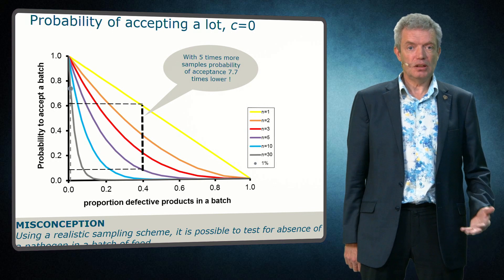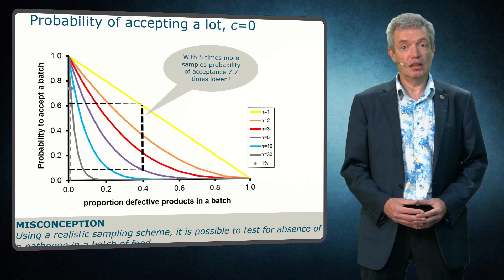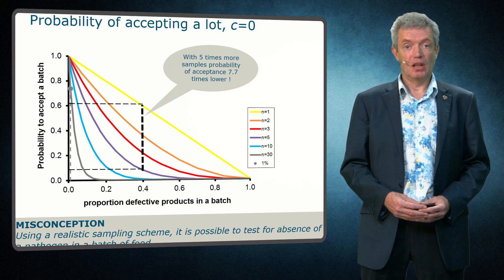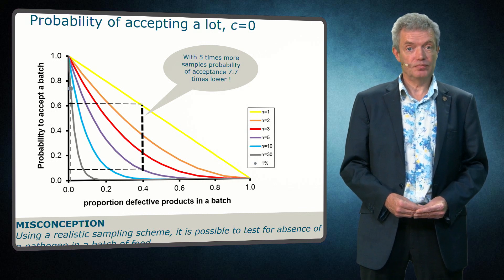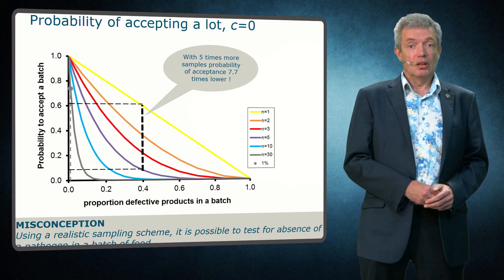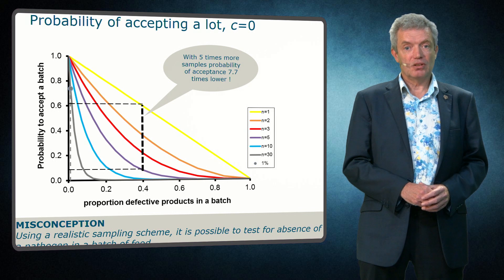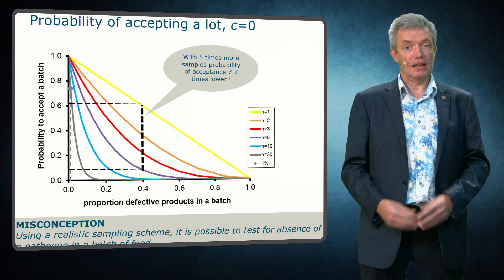Using a realistic sampling plan it is possible to test for absence of a pathogen in a batch of food. You only test for absence in the samples. And unless you test all foods, you can never prove absence in a batch. If we are at the very left part of the graph, so the organism is present but at very low levels, even sampling plans with large number of samples still let this go undetected.